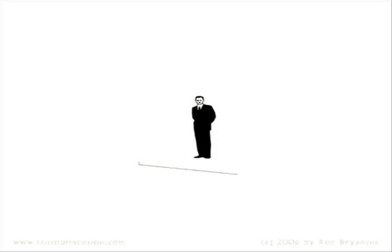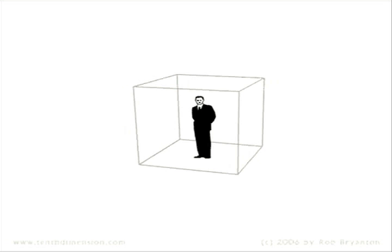Imagining the third dimension is the easiest for us, because every moment of our lives, that's what we're in. A three dimensional object has length, width and height. If we imagine an ant walking across a newspaper which is lying on a table, we can pretend that the ant is a flatlander, walking along on a flat, two dimensional newspaper world.